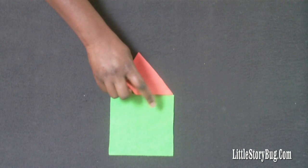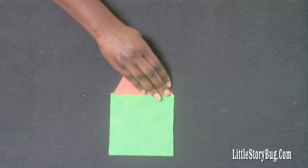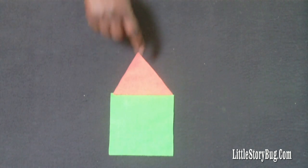plop, out of the sky, fell an orange triangle, and landed on top of the green square.